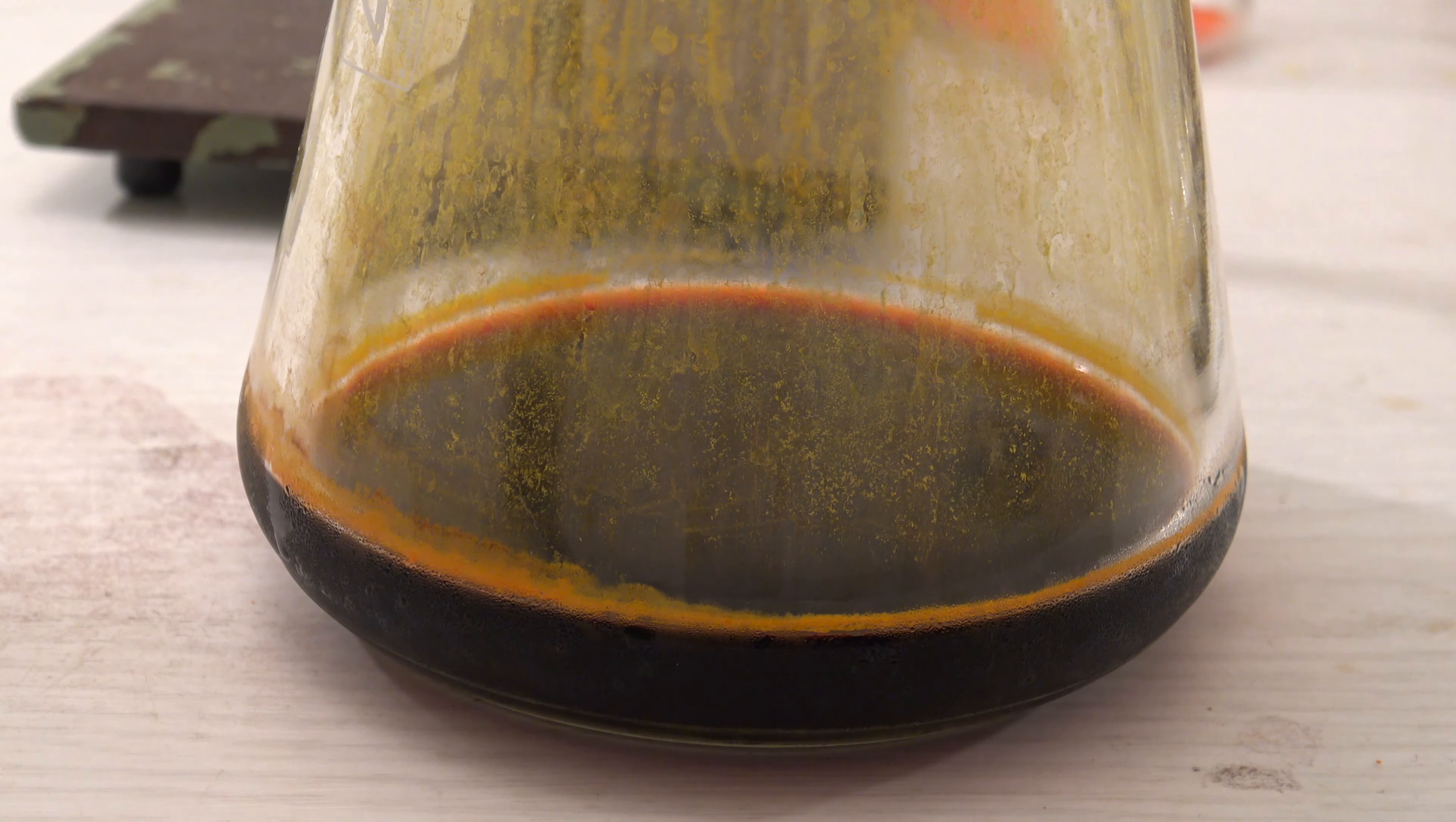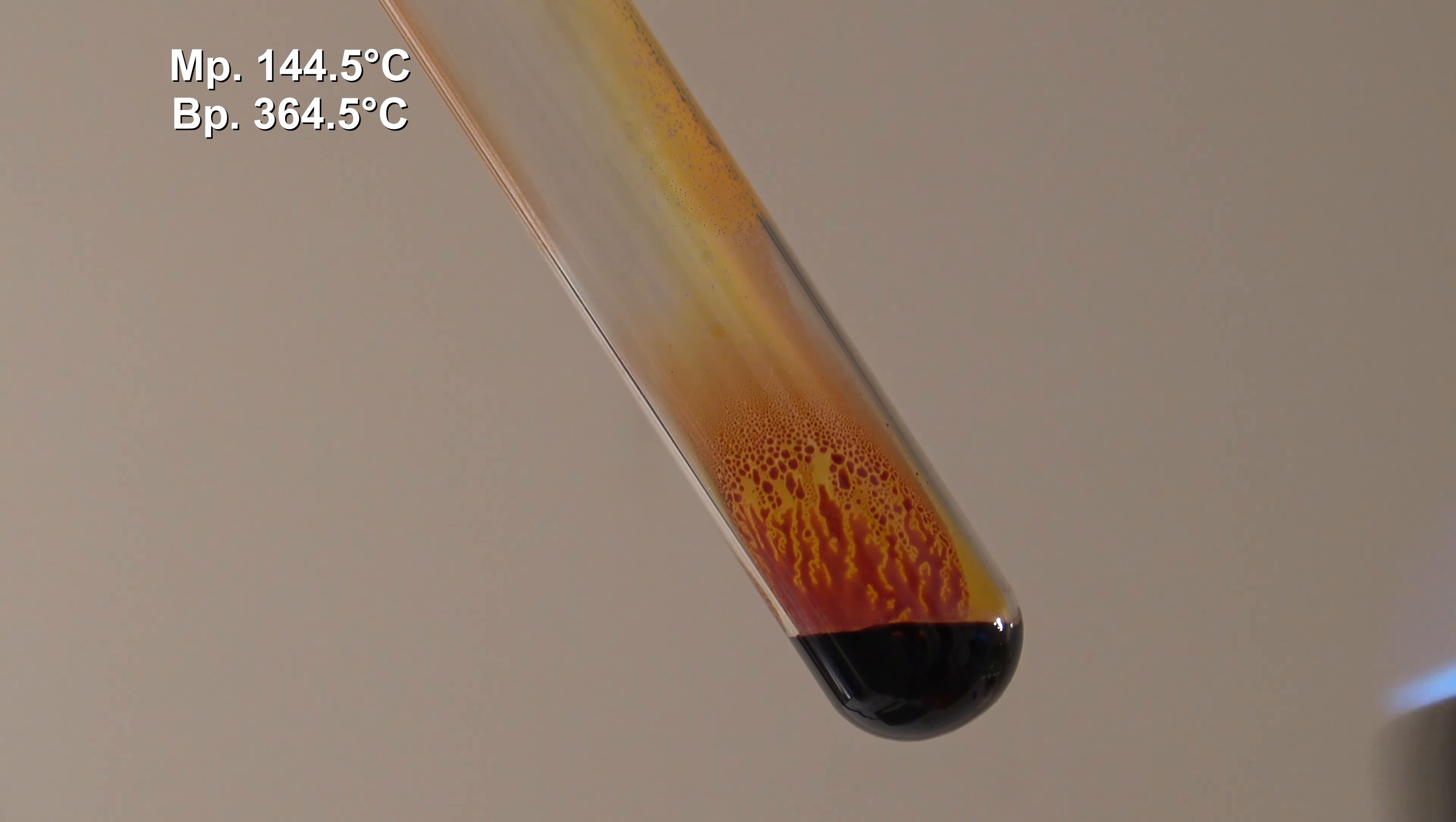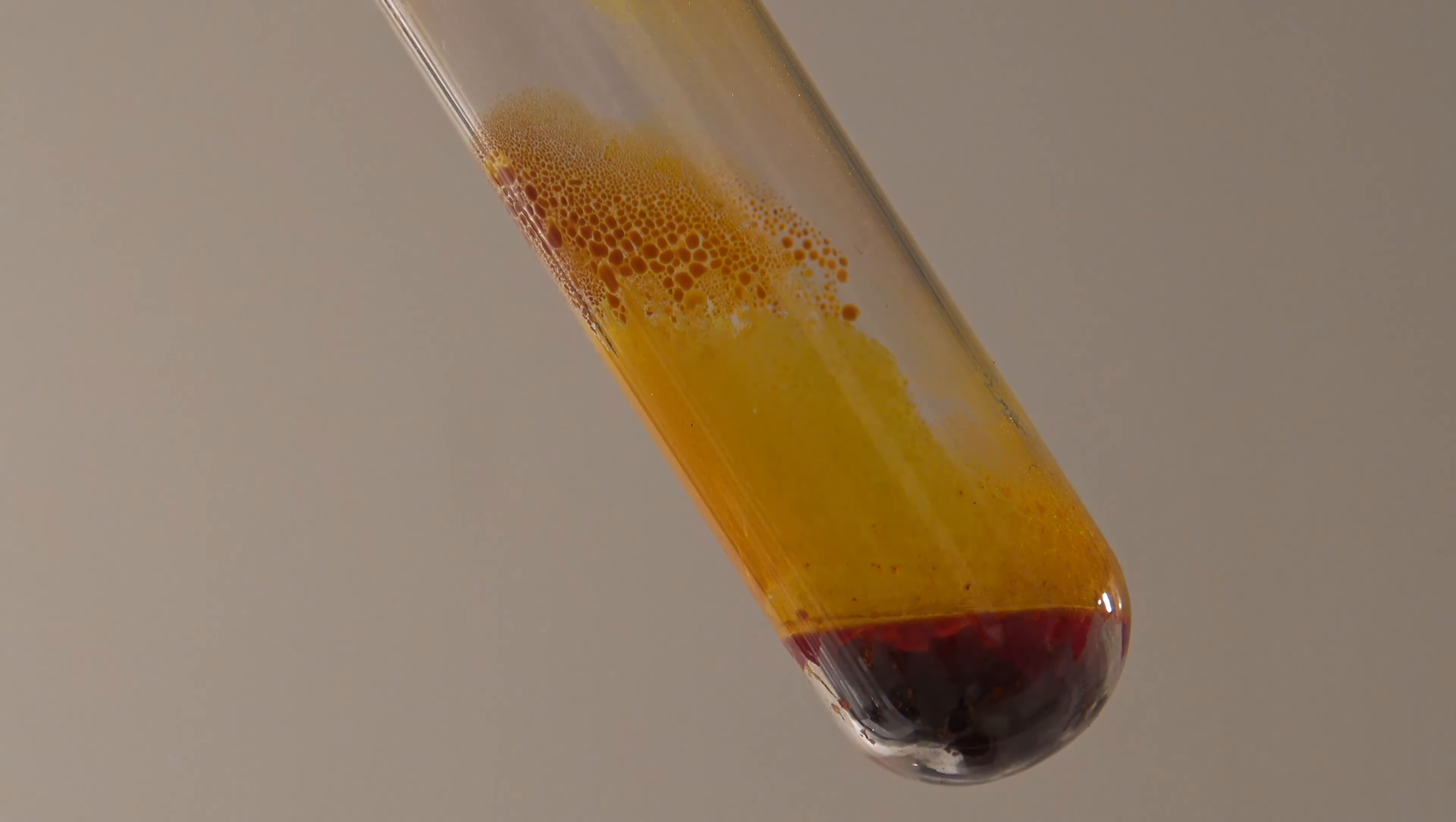To increase the yield, the filtrate could be boiled down even more. Tin(IV) iodide has its melting point at 144.5°C and boils at 364.5°C. Interestingly, it looks similar to bromine in its liquid state until it cools down and crystallizes again.